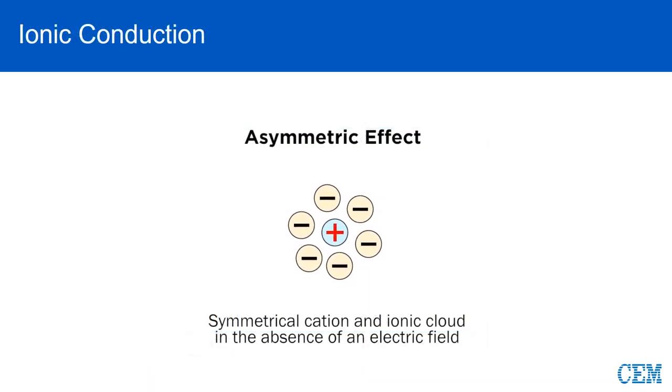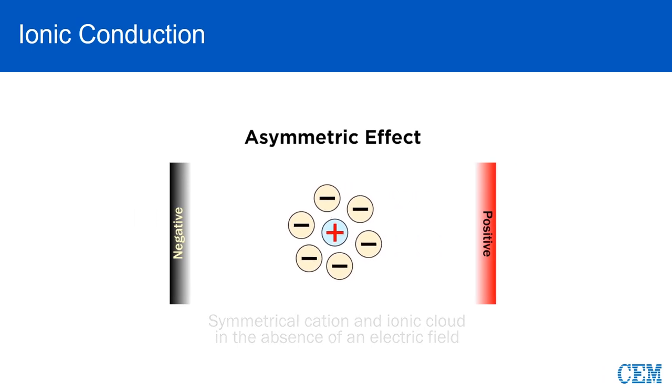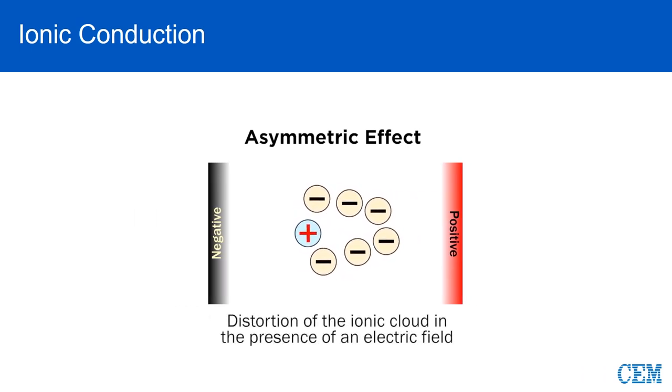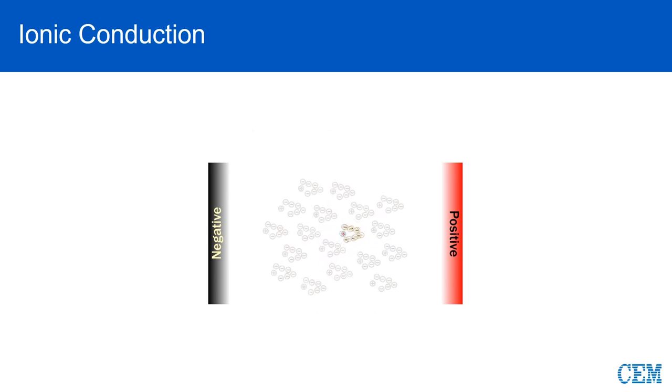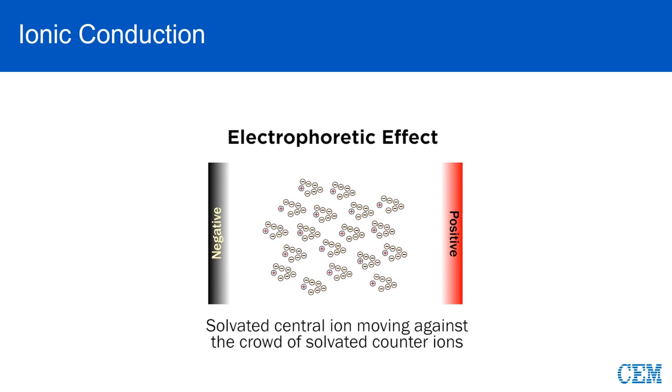The second heating mechanism is ionic conductance. Positively or negatively charged ions will be distorted by the electromagnetic field, which causes them to move towards the positive or negative side of the field. This is known as the electrophoretic effect.